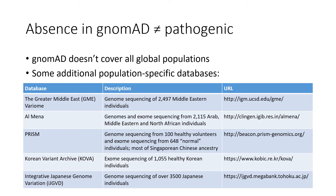While gnomAD is a wonderful resource that is constantly expanding in terms of the numbers of alleles and included subpopulations, we also wanted to make you aware of other population-specific databases that are interesting to explore. Some of these might be particularly beneficial to investigate if you're looking for more information about a patient with an apparently novel variant from a part of the world, such as the Middle East, which isn't specifically represented in gnomAD.